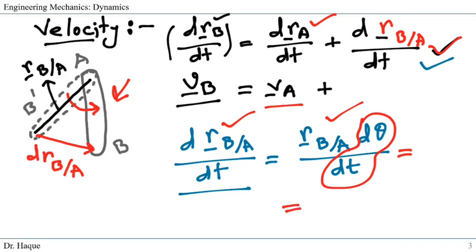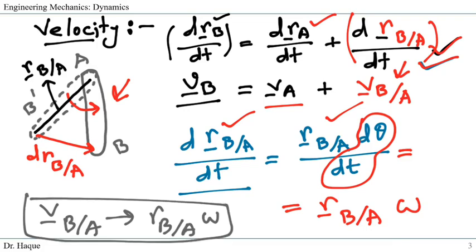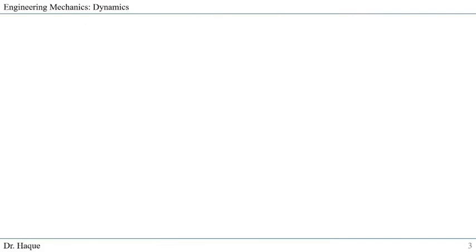So we put RBA times D theta where D theta over DT is the angular velocity. So we can finally write RBA times omega. So we can write the third term here as a velocity V of B with respect to A and its magnitude would be VBA. Its magnitude would be RBA multiplied by angular velocity. Now let's move to the next slide and see what this equation means.